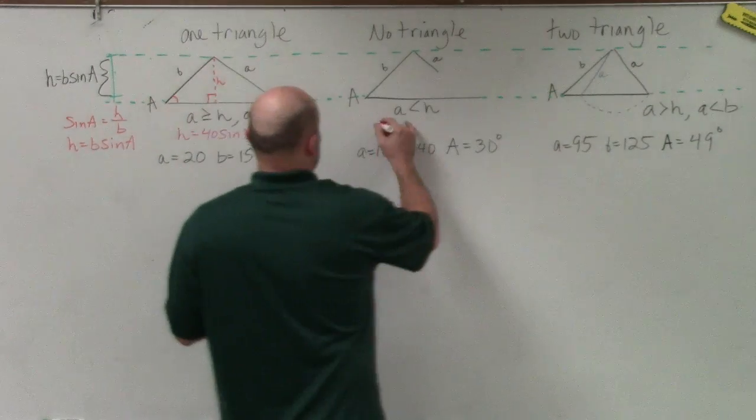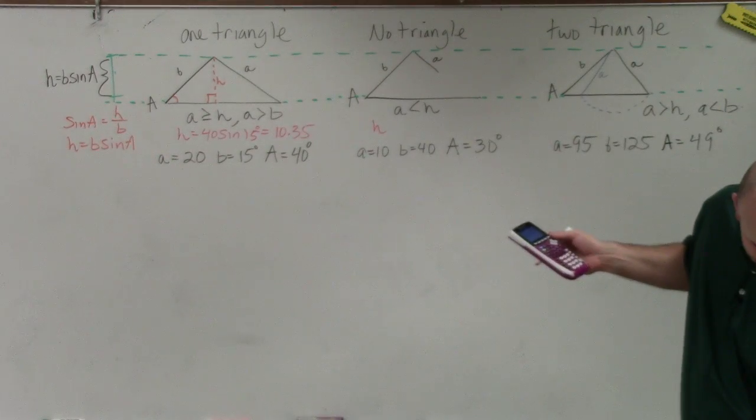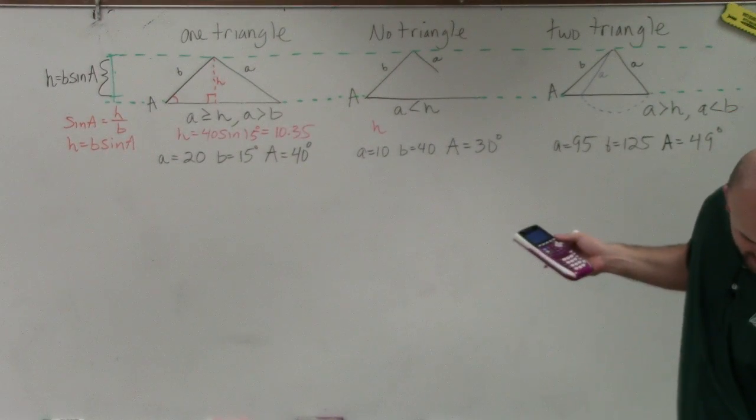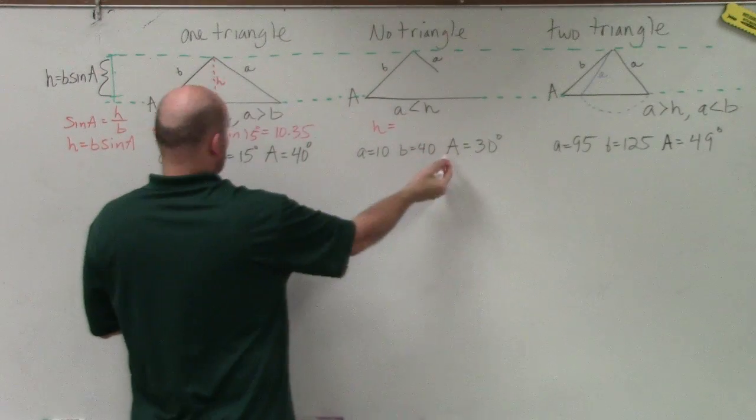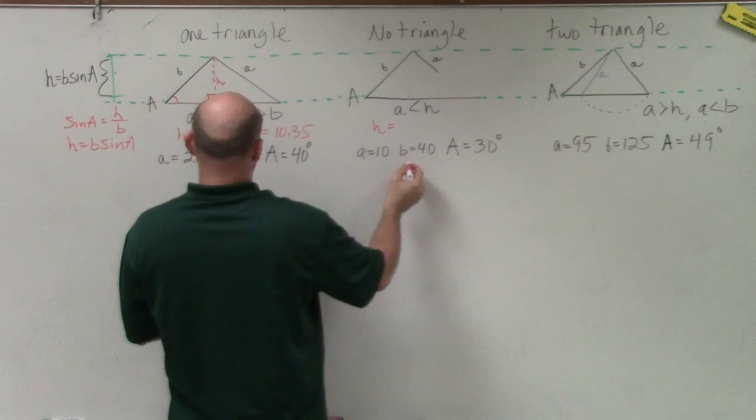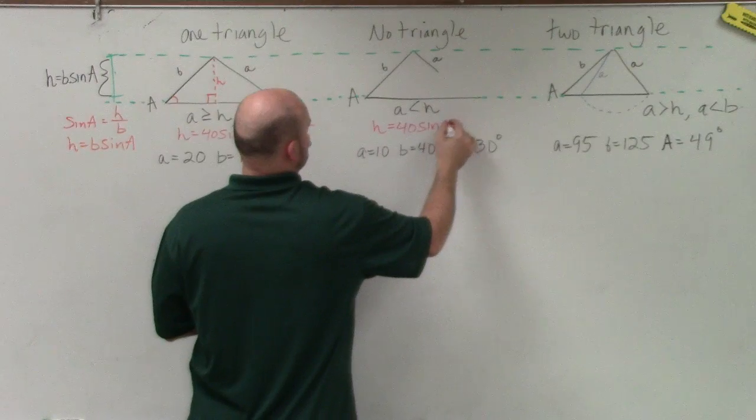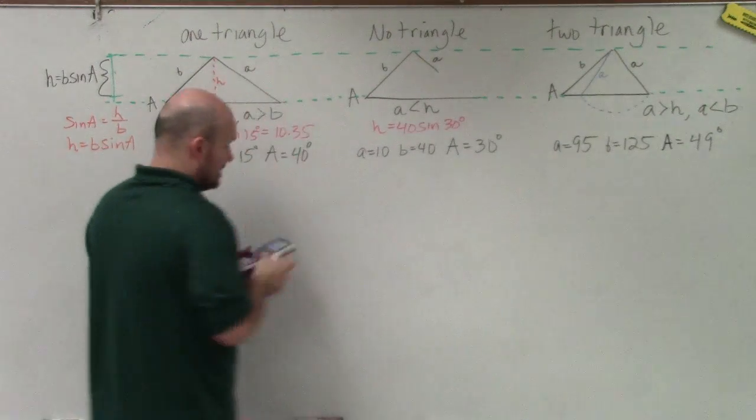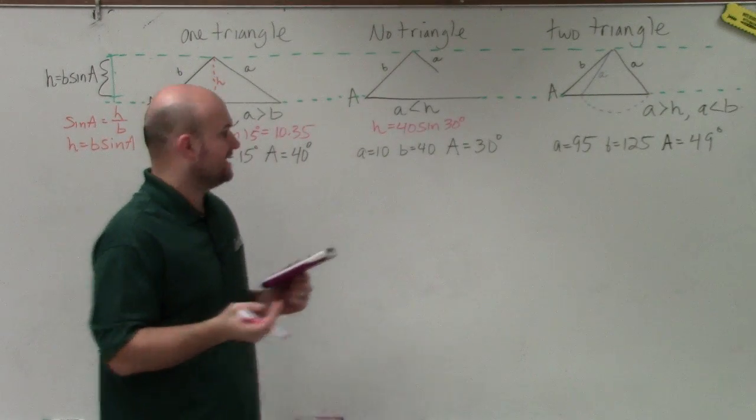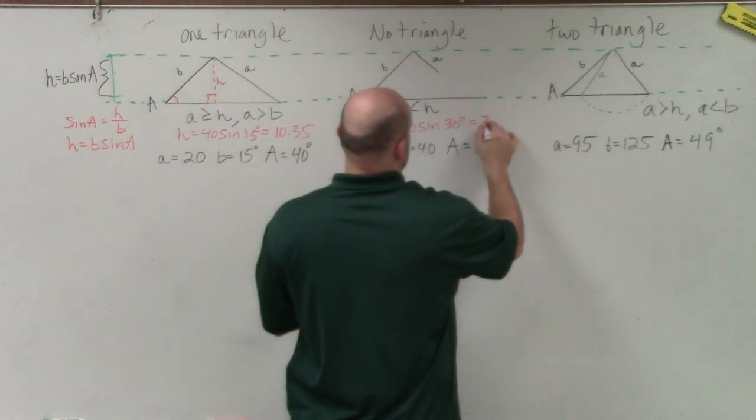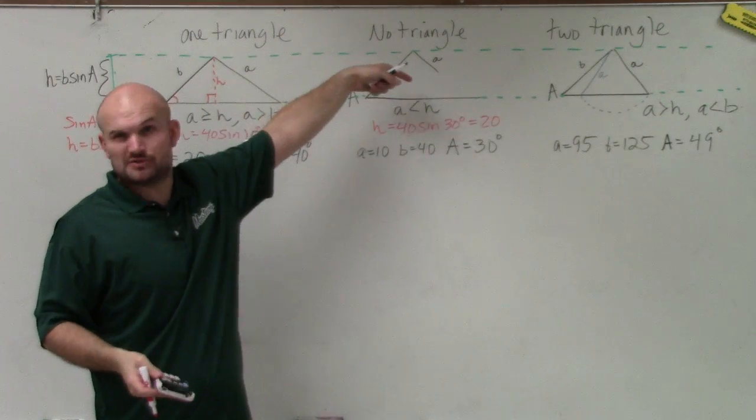Over here, I'm going to value for my H. Now, before I do this, I'm just going to make sure I wrote down the problem correct. So I have 10, 40, and 30. In this case, again, my A is going to represent it. This will represent my B. So now I'll do 40 times the sine of 30 degrees. And I get 20. So obviously, you can see now my H is going to be greater than A. So therefore, this produces no triangle.